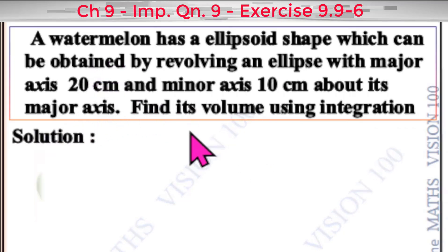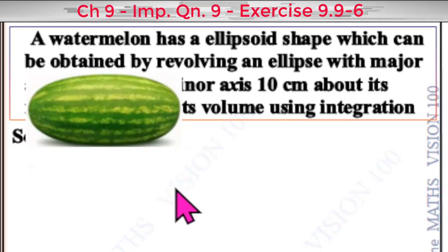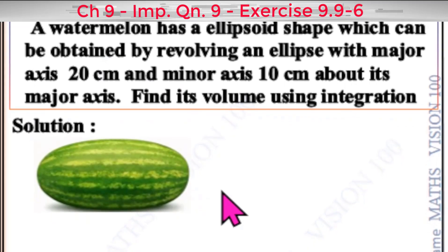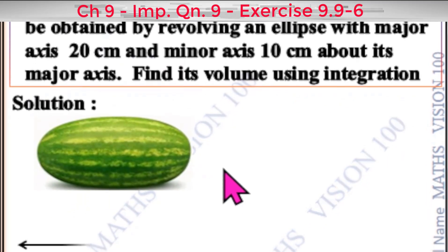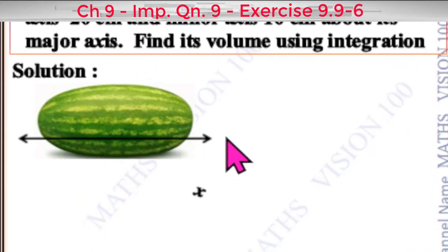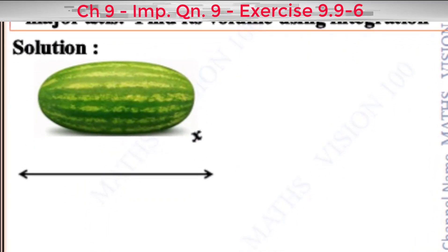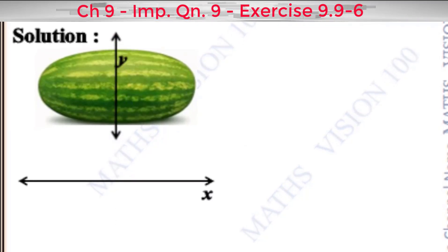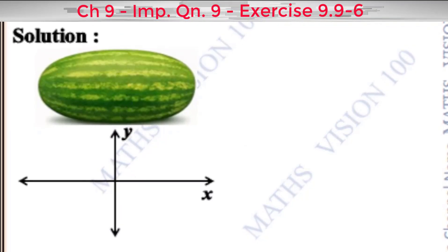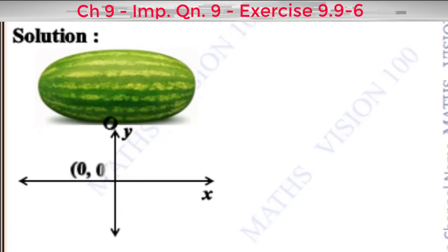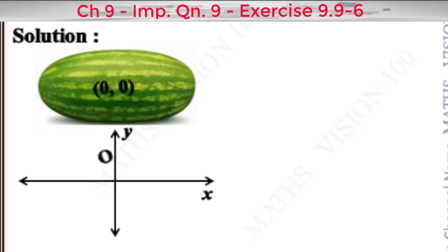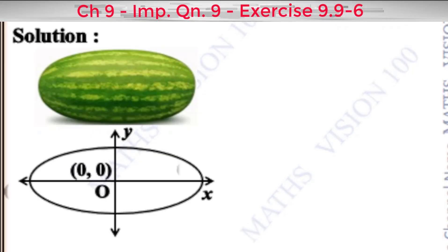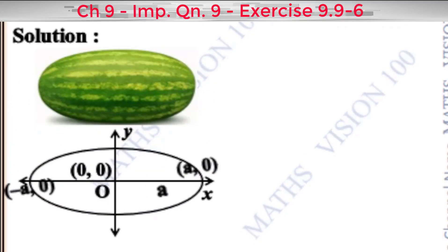The watermelon shape is an ellipsoid shape. If we set up the x-axis and y-axis with the origin at the center, the cross-section is an ellipse.